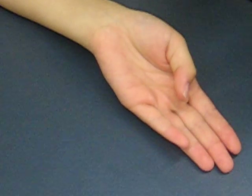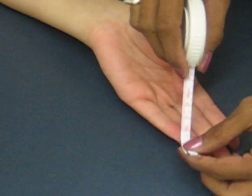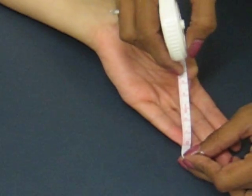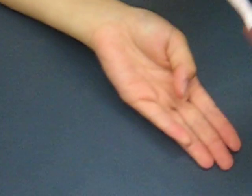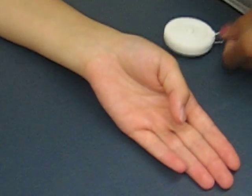I would then measure the distance from the tip of the pinky to the tip of the thumb, which in this case would be four inches. And that's how you would record it.